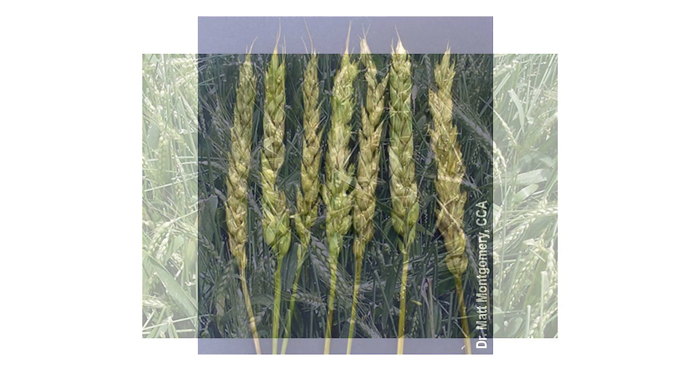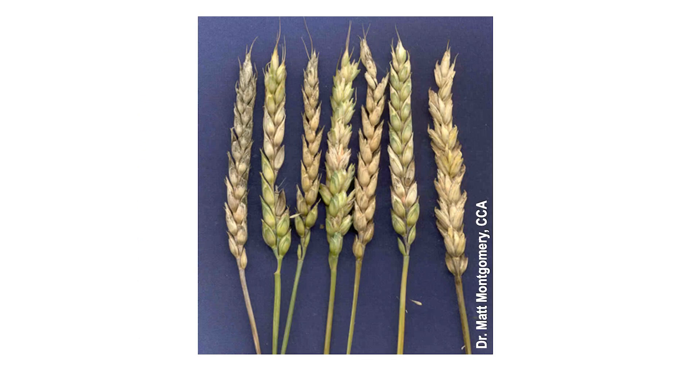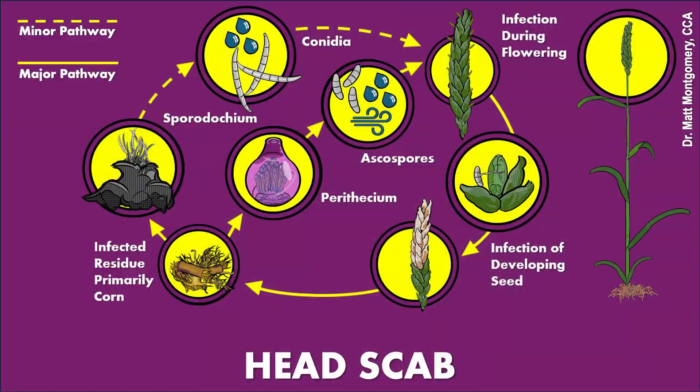The wheat behind me is not yet ready to be sprayed for scab, but people will be thinking about it before very long. This crop is thinking about going to the boot stage. After that will come the head, the spike. We'll need to protect that head from head scab — this disease that bleaches out the head and causes kernels to shrivel up, wrecking yield. I want to provide some context for why we pay attention to this disease, talk about the life cycle, and explain how the life cycle helps us understand why fungicide application recommendations are the way they are.